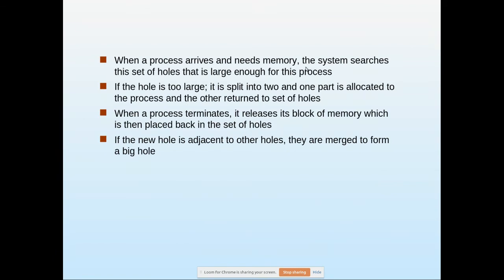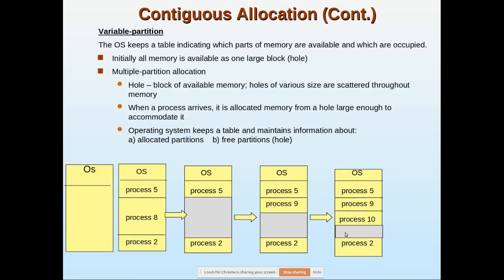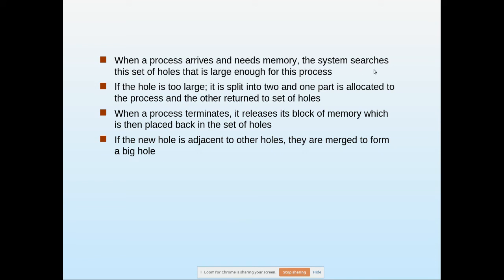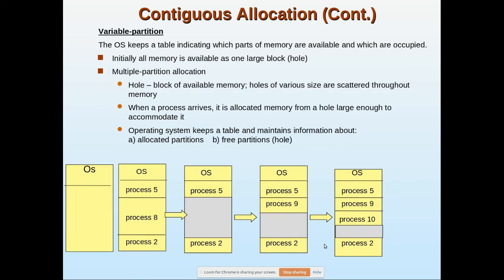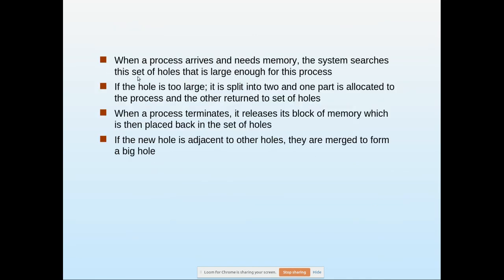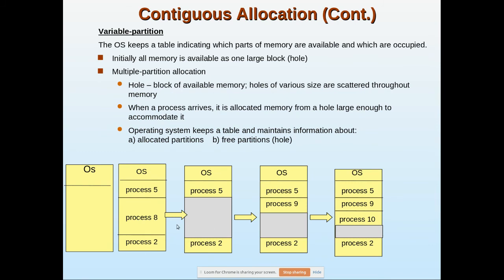When a process arrives and needs memory, the system searches the set of holes for one that is large enough. If a 10K hole is available and the incoming process requests exactly 10K, it is assigned there. If it requires 12K, the system searches for a 12K free space. If the hole is too large, it is split into two: one part is allocated to the process and the remainder is returned to the set of free holes.